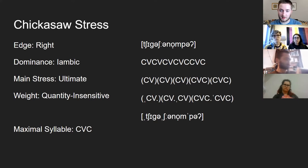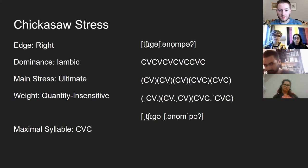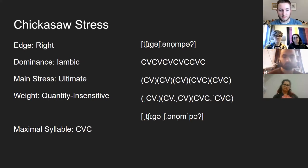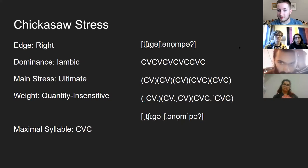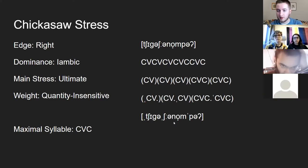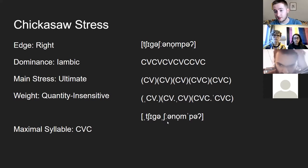Chickasaw is quantity insensitive, meaning light syllables can be stressed and heavy syllables can be unstressed. Even highly centralized vowels like the schwa can be stressed, which is highly unnatural for English speakers. As an example word, the name of the language itself shows final stress on the last syllable and secondary stress on the 'sha.' There is also a gemination in this word, where the 'sha' is lengthened because the previous syllable ends in 'sha' and the next one starts with 'sha,' so they merge into a lengthened fricative.